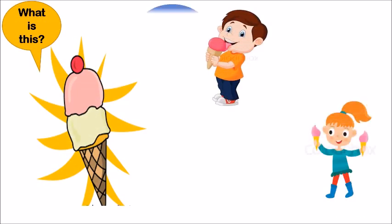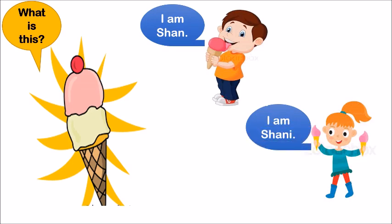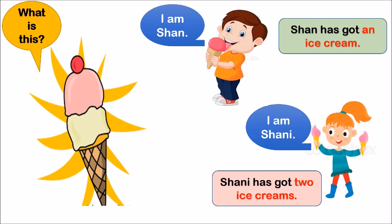Children, look at this picture. It's about something cool and sweet. Can you guess? Yes, it's an ice cream. Let's meet two friends — Shan and Shani. Shan has got one ice cream, and Shan has got two ice creams. One ice cream is called singular, but if there's more than one, it's called plural. Today we are going to talk about singular and plural forms of nouns.